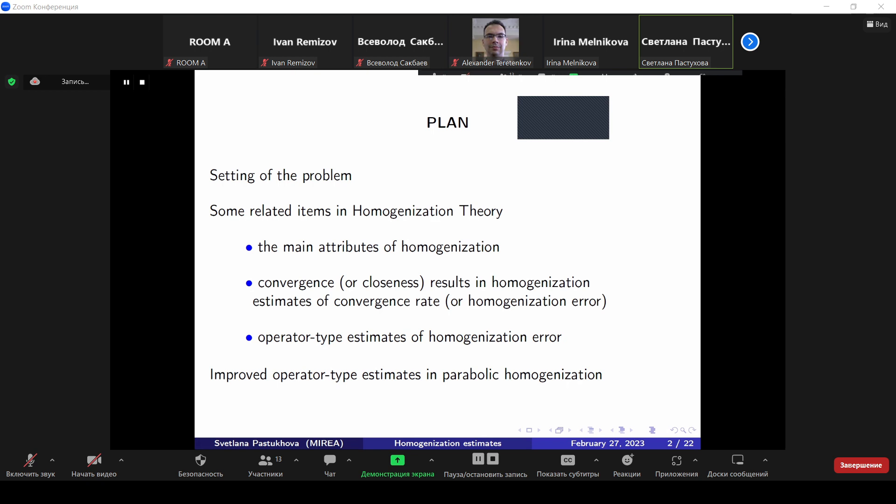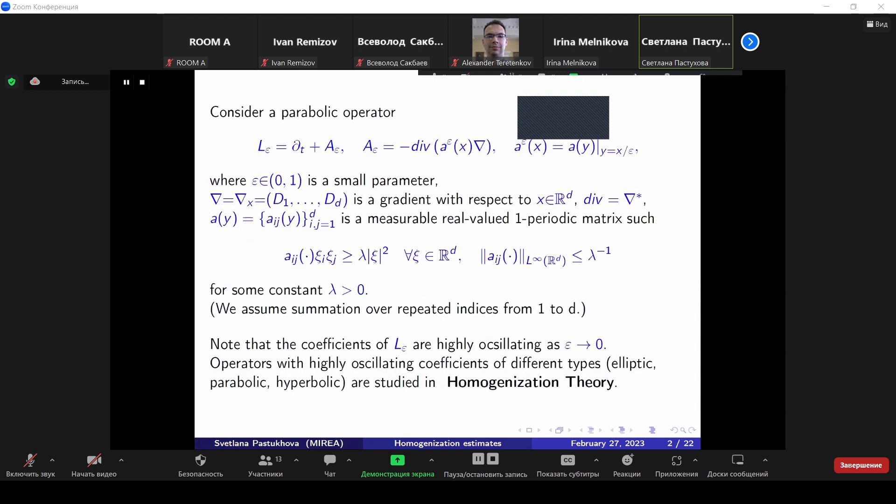They are not too simple to be formulated just now, in the very beginning. I aim to formulate the new results, which are improved operator-type estimates for homogenization error, with remainder term of order epsilon to the power 2, where epsilon is some small parameter which tends to 0. The elliptic part of this operator A epsilon is the divergence type, second-order elliptic operator. Nabla denotes the gradient with respect to spatial variable x in R to the d.